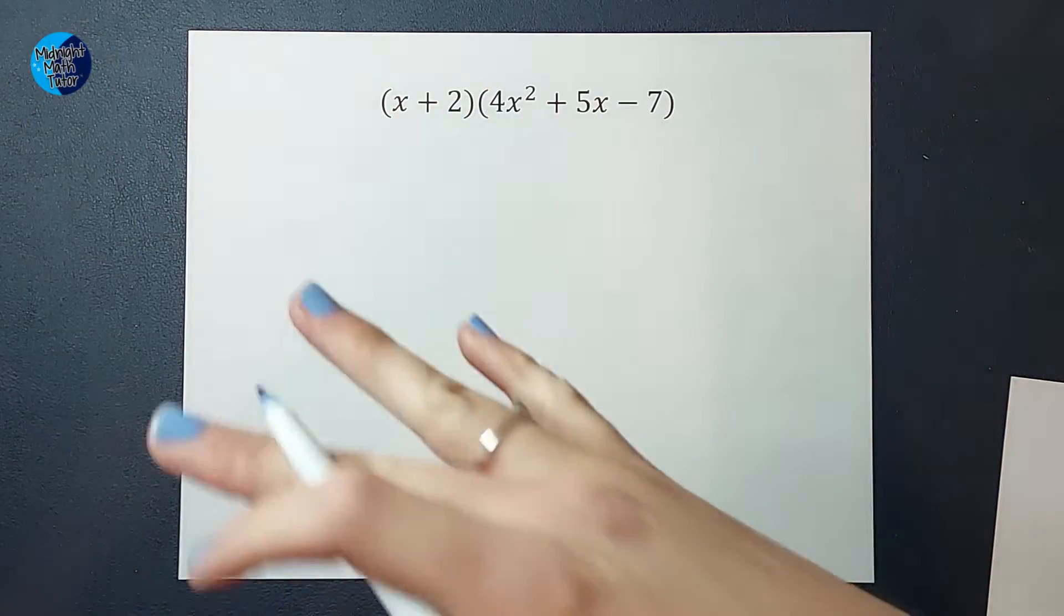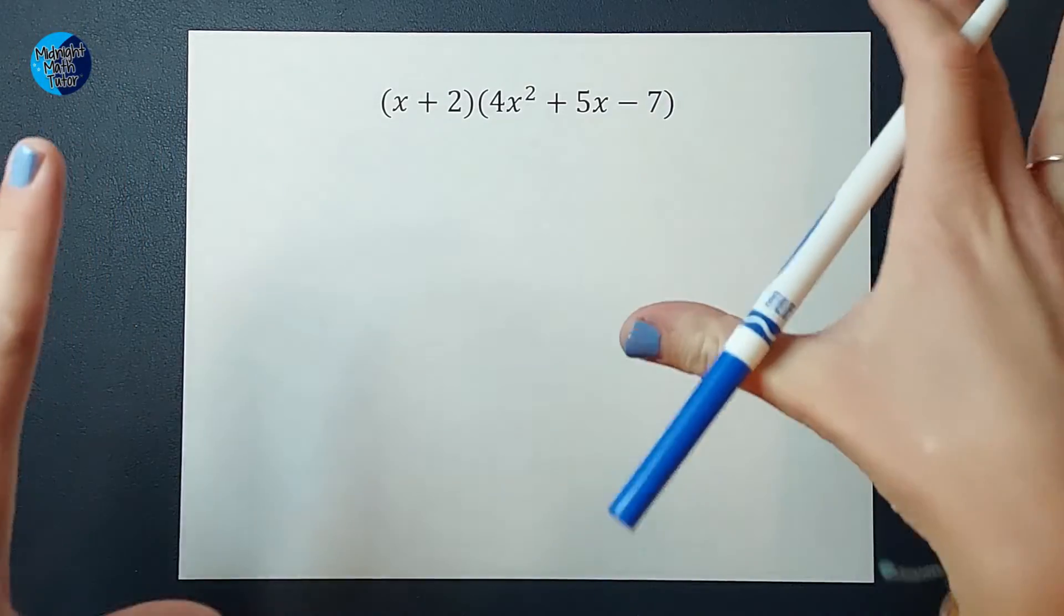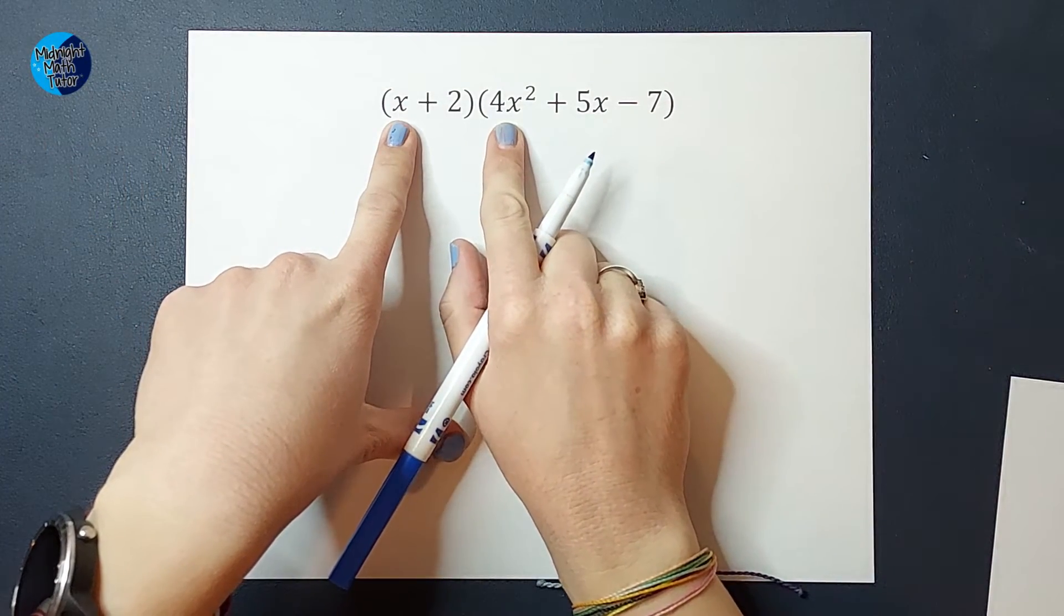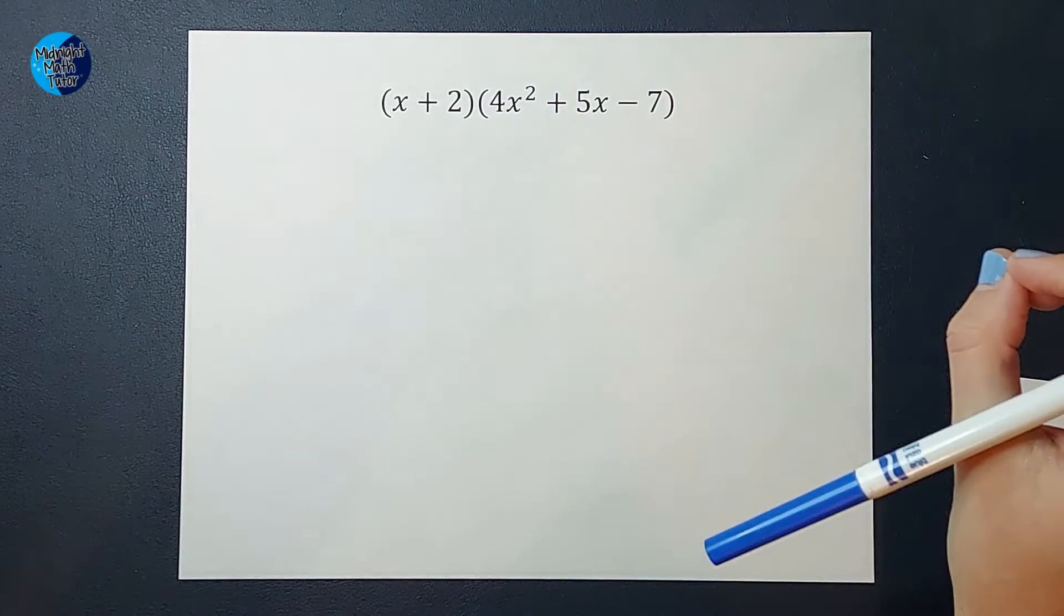When we are multiplying, we can multiply things that are not like terms, meaning I could not add x and 4x squared, but I can multiply them.